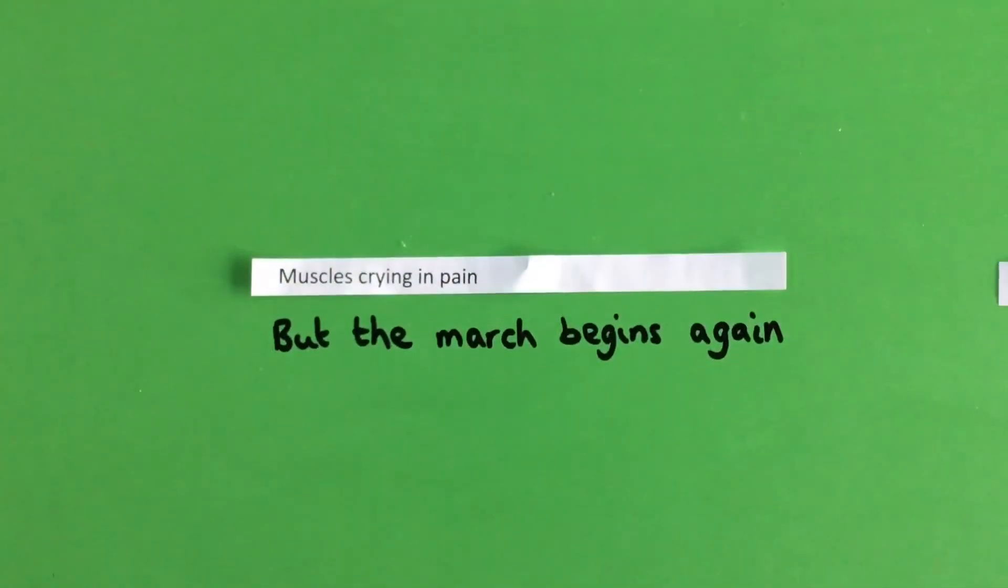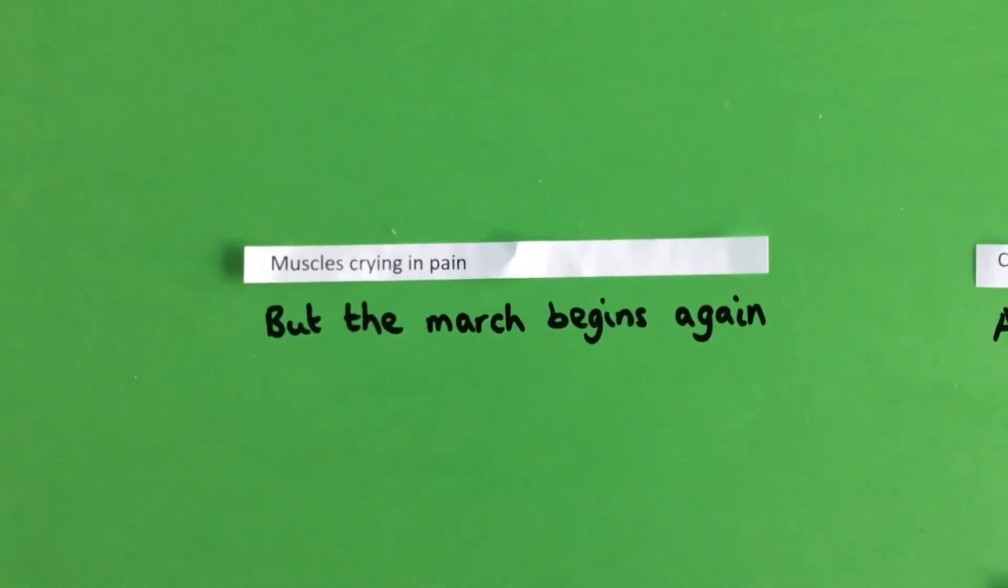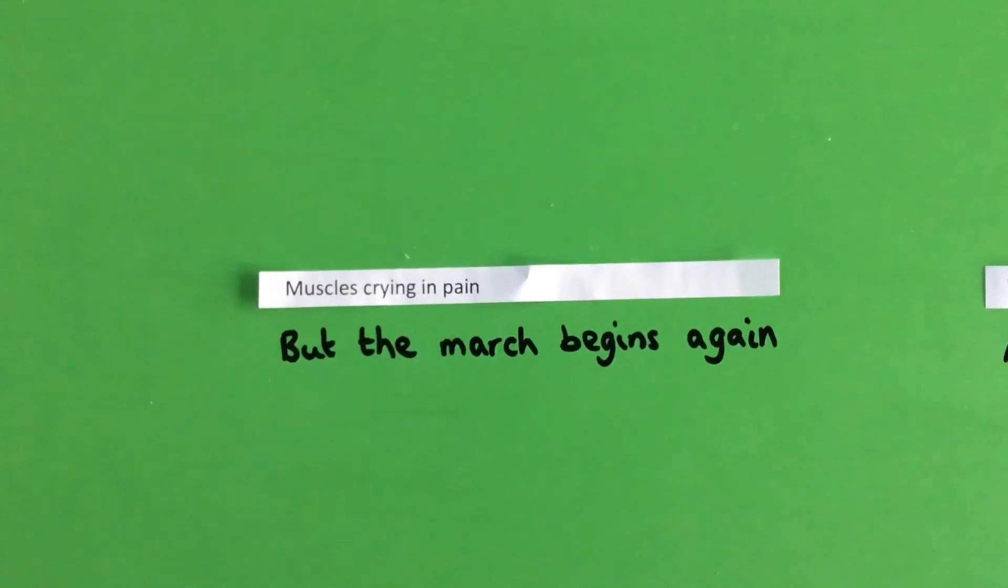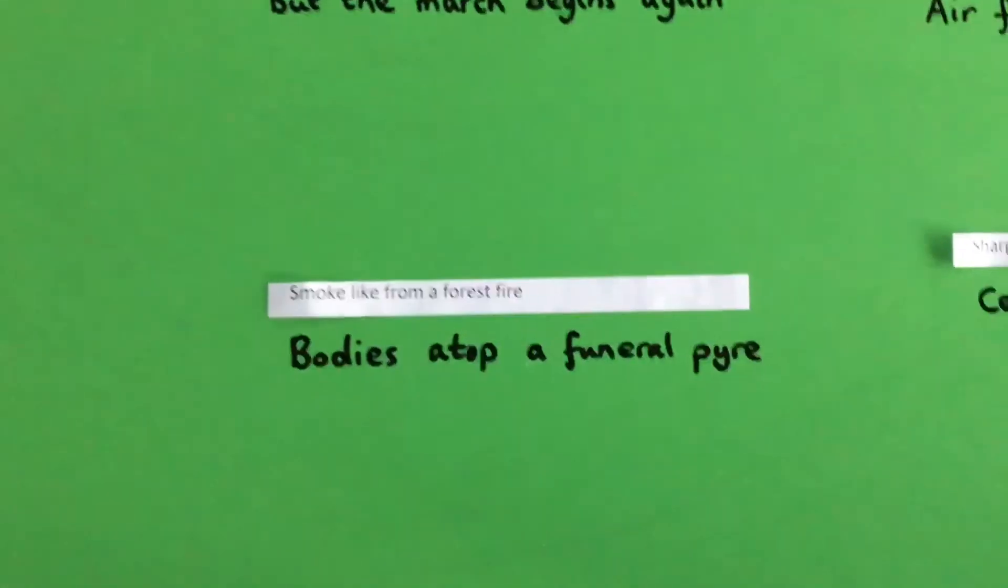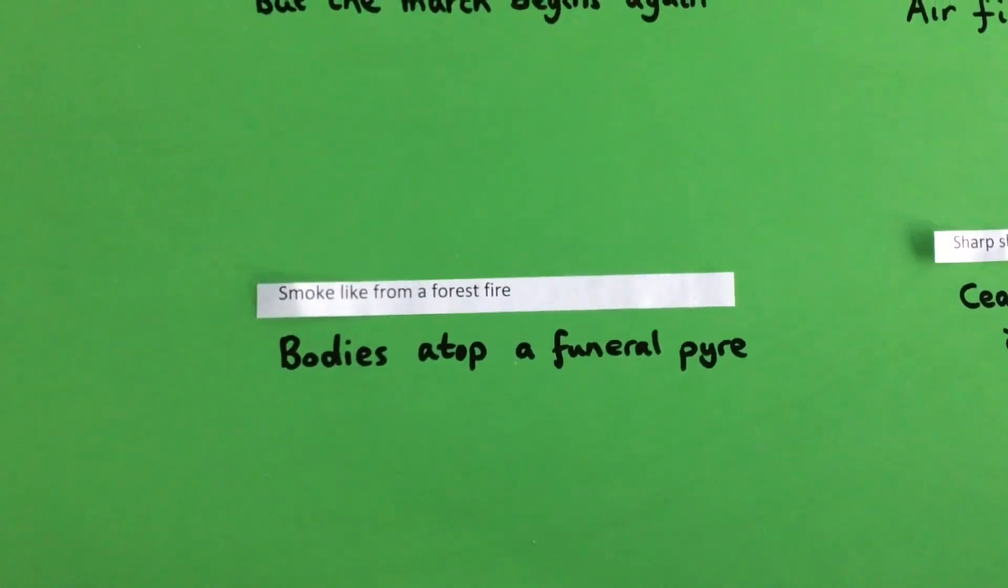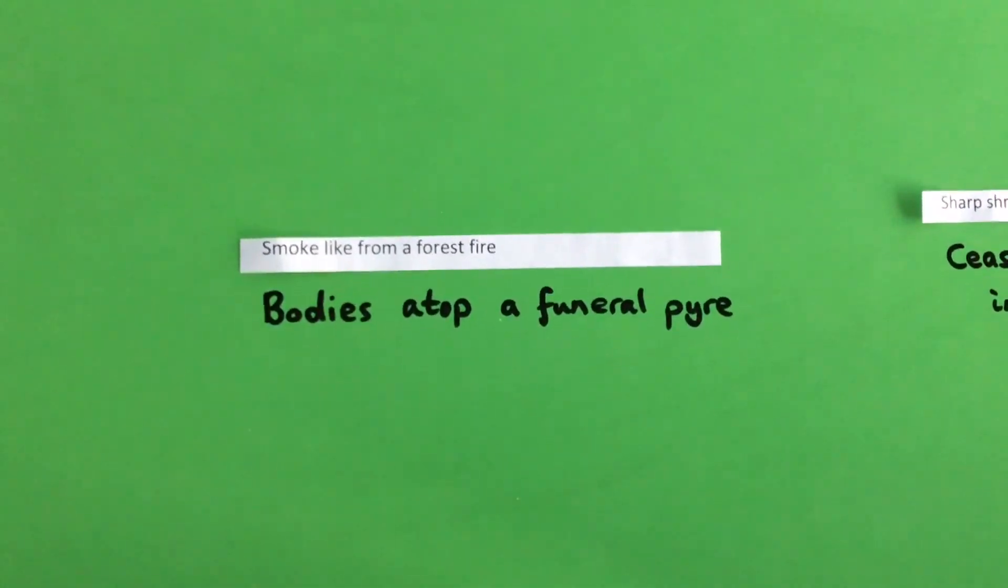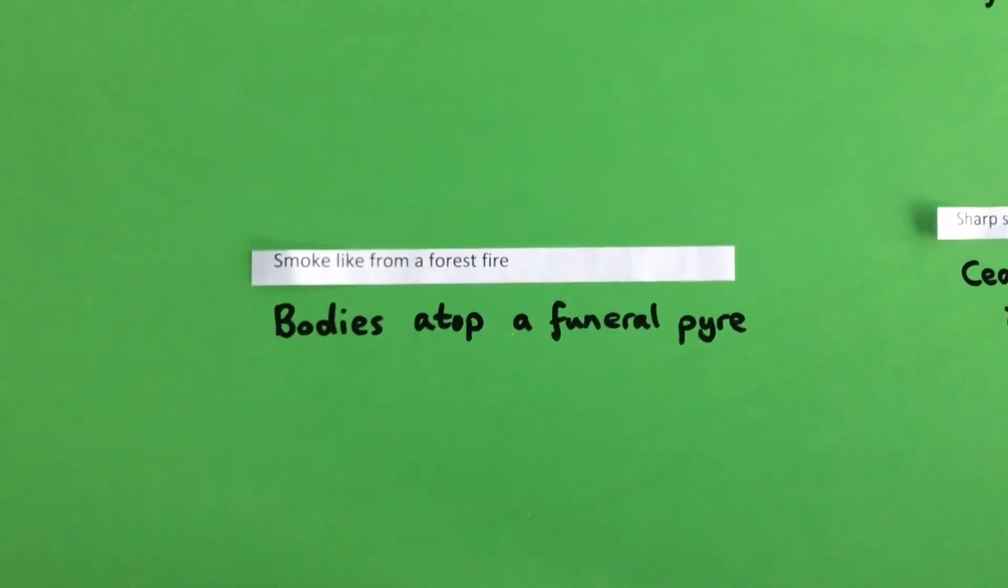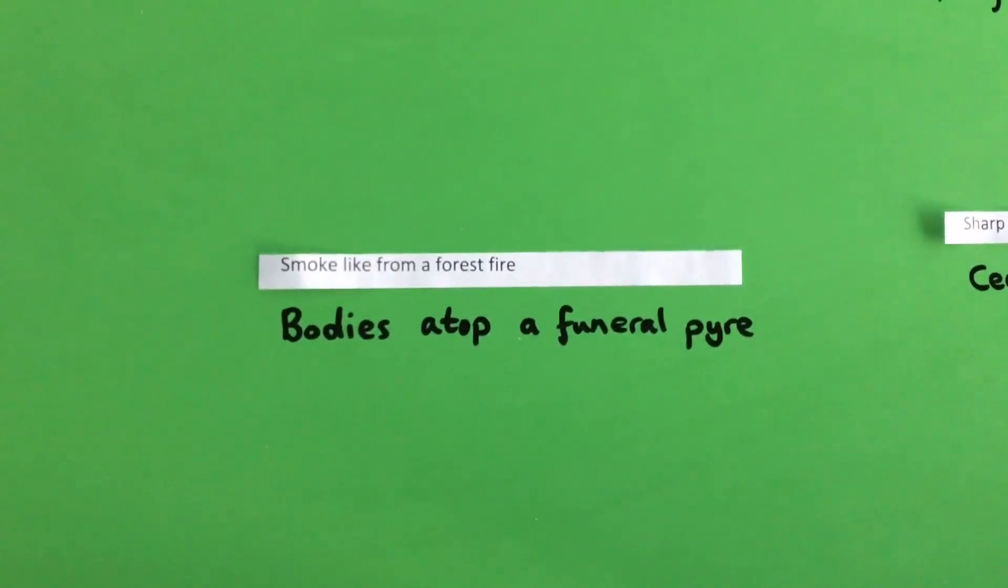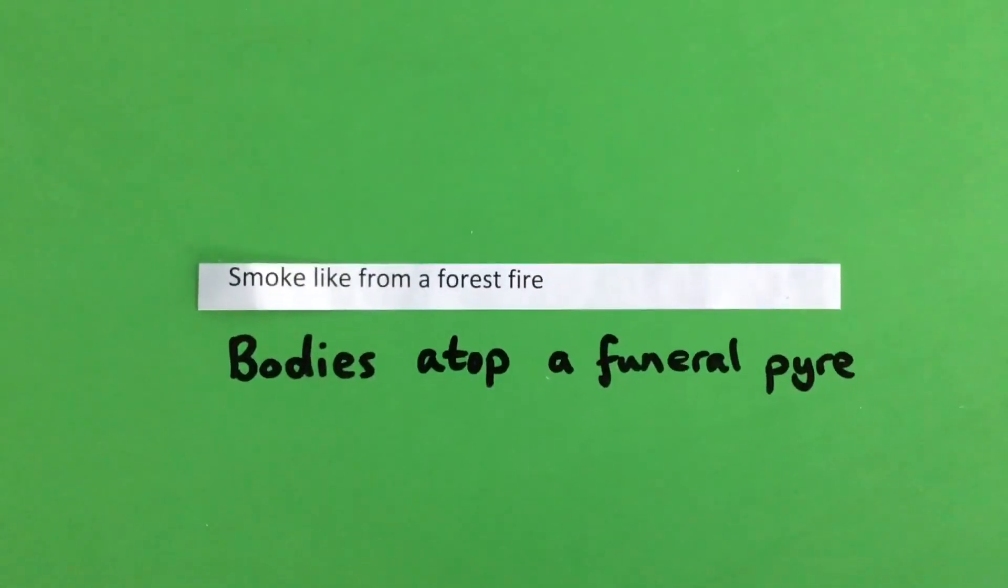Okay so that first one, muscles crying in pain, but the march begins again. Okay so that's one option, you could come up with a few other possibilities. Smoke like from a forest fire, bodies atop a funeral pyre. Pyre, a funeral pyre being something that's used in some countries around the world. A way of, instead of burying the dead, burn the dead, atop a funeral pyre. So that's something we could use. Atop meaning on top of.